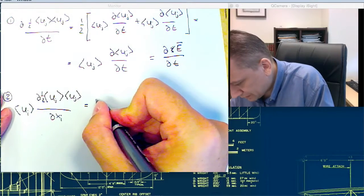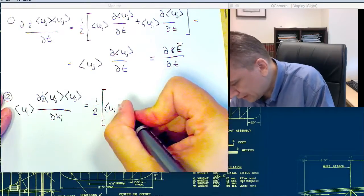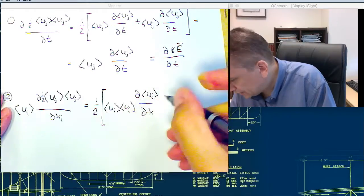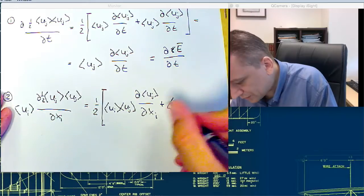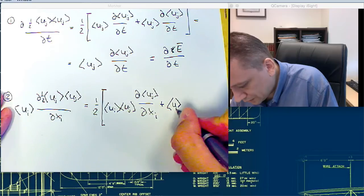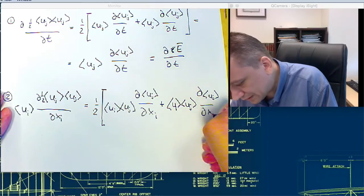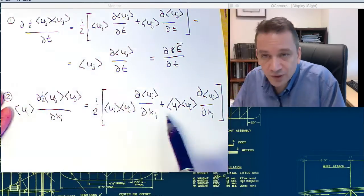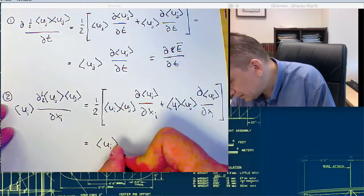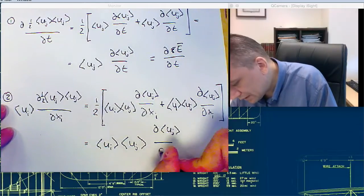Let's see how this one works out. This one is going to be one half ui uj dxi plus, again this term here, product rule, first this term then this term: ui uj dxi. Again, you see the term is here twice, there's one half, so what I'm left with is ui uj d uj dxi.